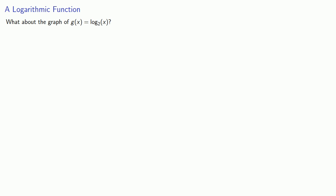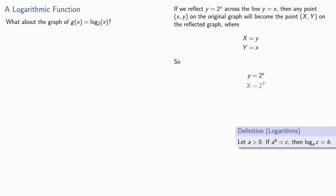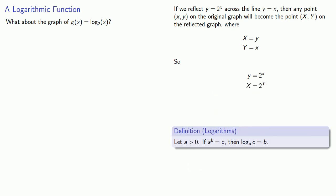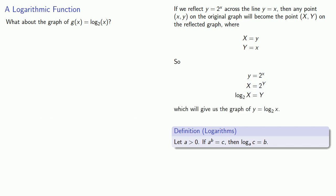What about the graph of g of x equals log to base 2 of x? Remember that log and exponential functions are inverses of each other. So if we reflect y equals 2 to the x across the line y equals x, any point (x, y) on the original graph becomes the point (X, Y) on the reflected graph, where X is the old y value and Y is the old x value. The equation y equals 2 to the x becomes, by the definition of logarithms, y equals log base 2 of x. So this reflection gives us the graph of y equals log base 2 of x.